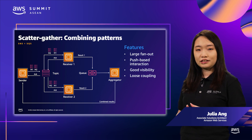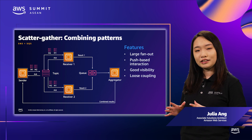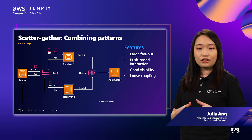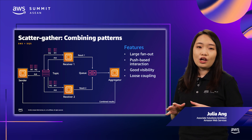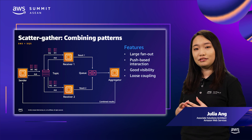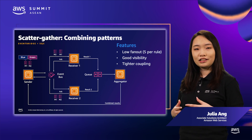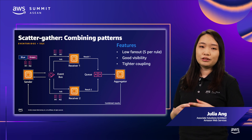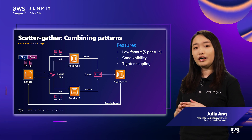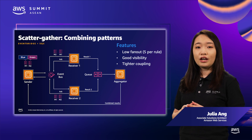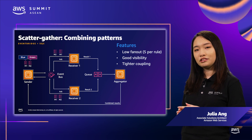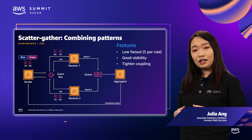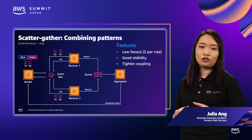One way to achieve scatter-gather is to use SNS to scatter the requests and SQS to gather the results — a good fit for large fanout and loose coupling. For the scatter step, you can also use EventBridge, which is a good fit if you need complex routing logic and your receivers are already hosted on AWS. However, it results in somewhat tighter coupling, and since each rule can target a maximum of five receivers, the fanout is lower than with SNS.